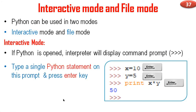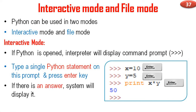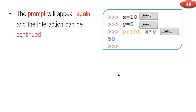If Python is open, the interpreter will display the command prompt. Type a single Python statement on the prompt and press the enter key — for example, x = 10, then press enter. If there is an answer, the system will display it. Print x * y and press enter — the answer is there. The command prompt will appear again and the interaction can be continued.